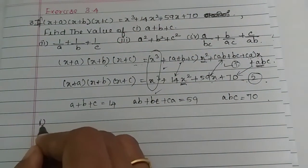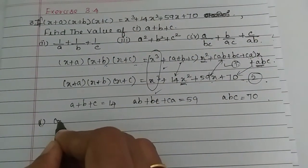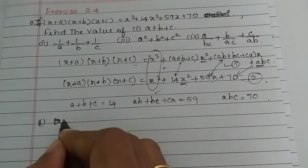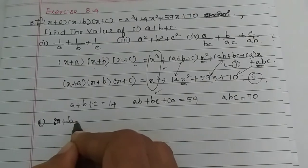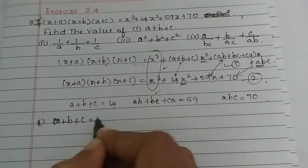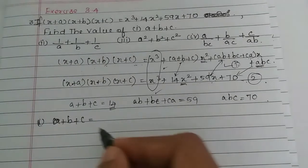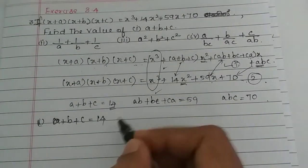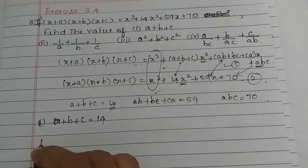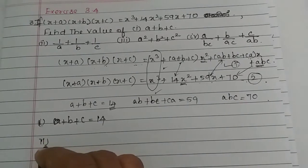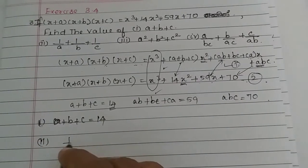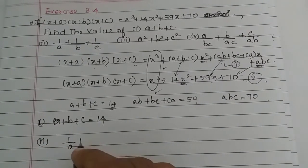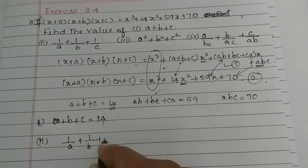So the first subdivision answer: A plus B plus C equals 14. Now the second subdivision: 1/A + 1/B + 1/C.